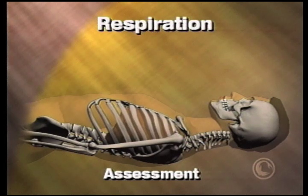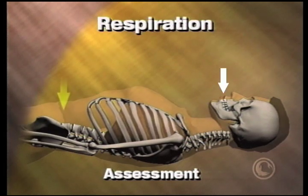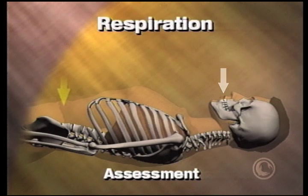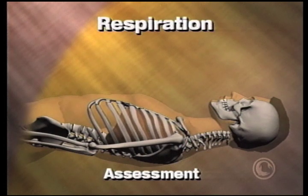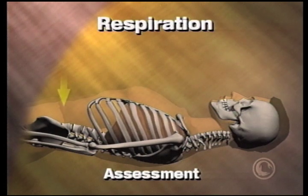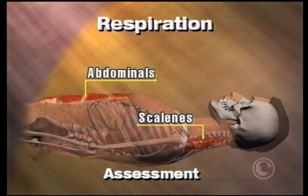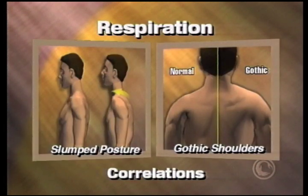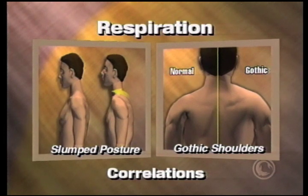The worst sign of breathing dysfunction is if the abdomen sucks in during inhalation, because the person is too tight in their abdominal wall. This will lead to poor posture, such as round shoulders, slumped posture, or shrugged gothic shoulders.